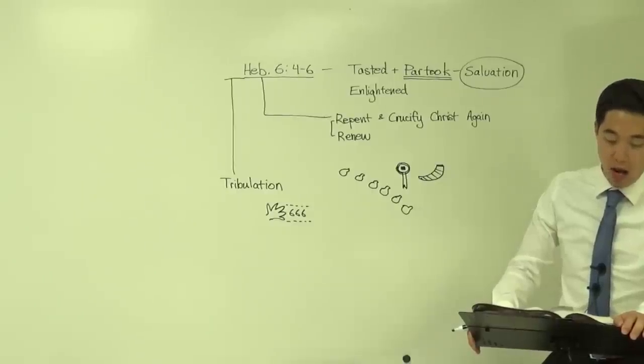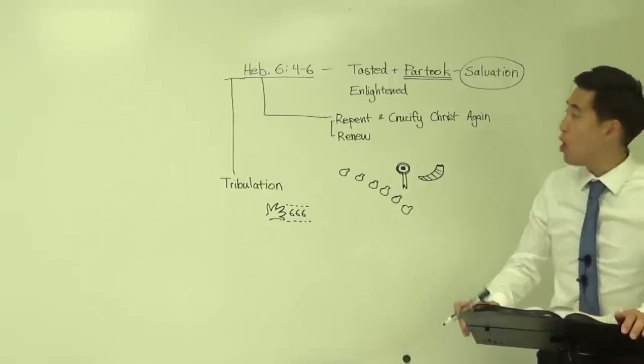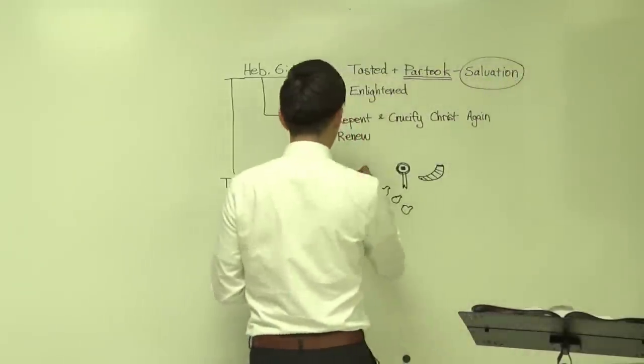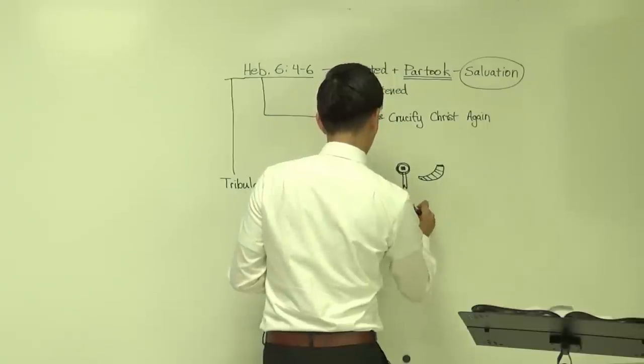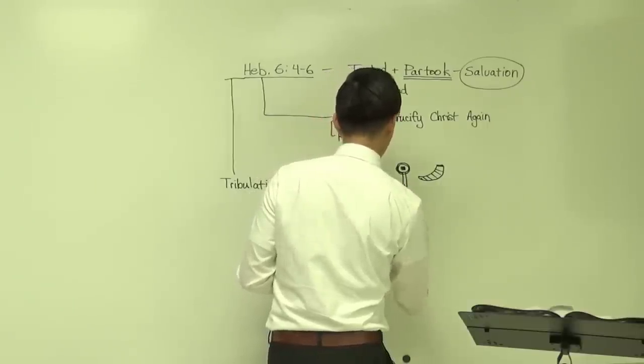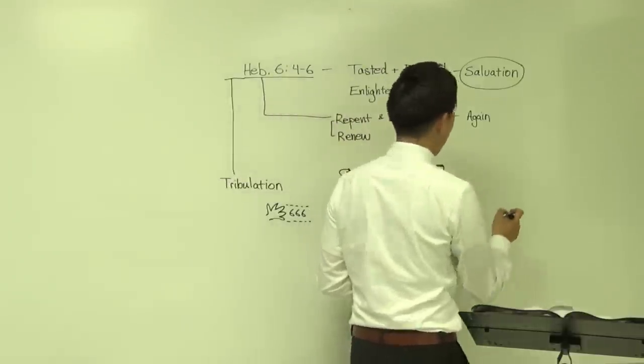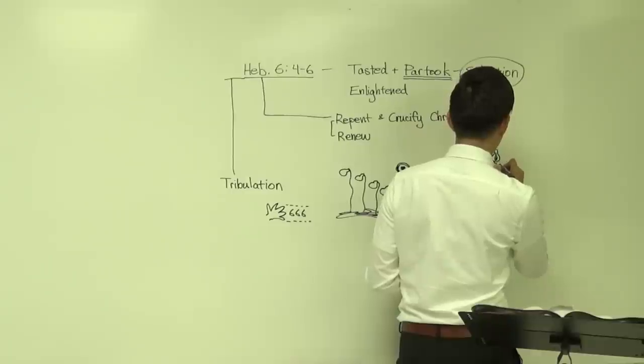And the foolish said unto the wise, Give us of your oil, for our what? Lamps are gone out. So notice that the ones who were foolish over here, that their lamps went out. The oil went out. A lot of commentators say that that's referring to the Holy Ghost. So then they teach about losing the Holy Ghost for salvation. But actually it makes way more sense that when you're talking about these lamps, that this is an application toward the tribulation timeline.